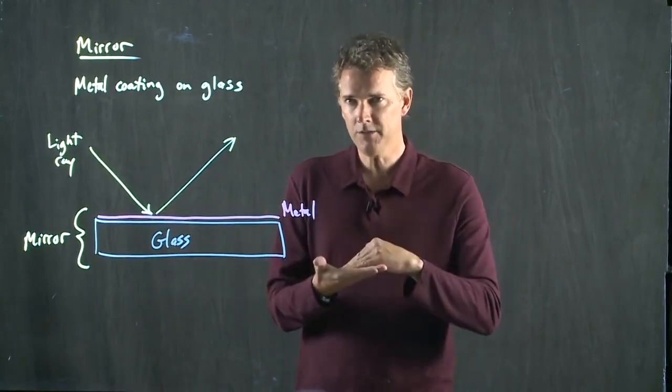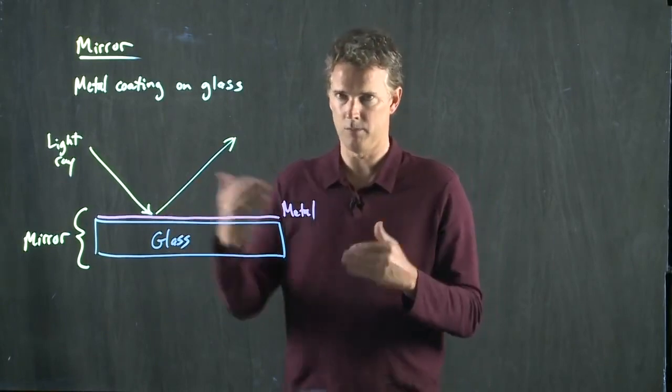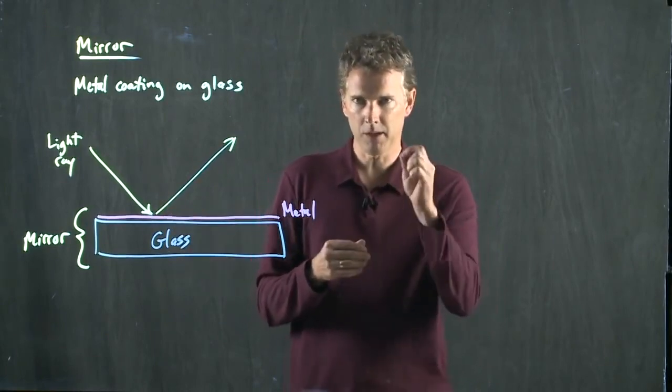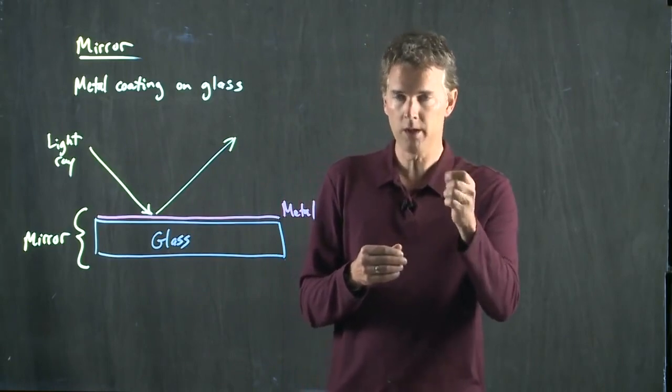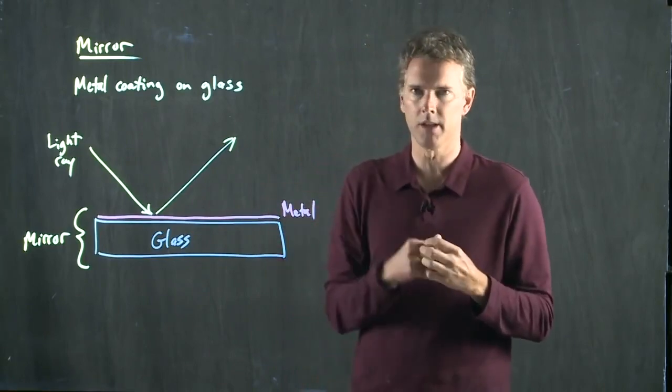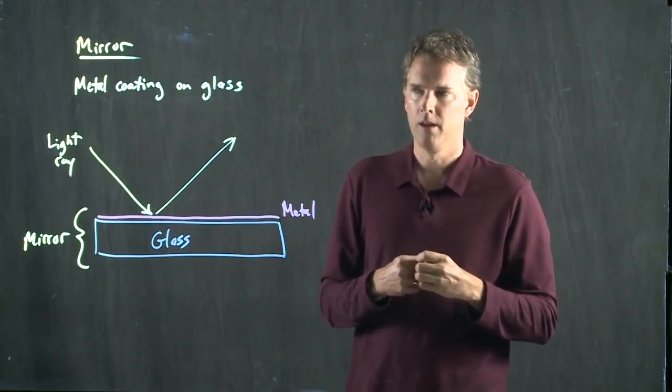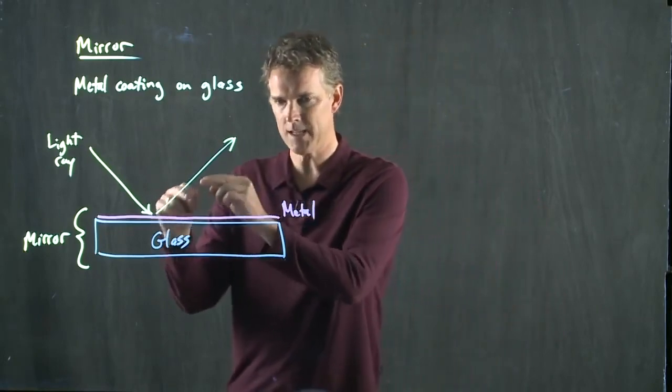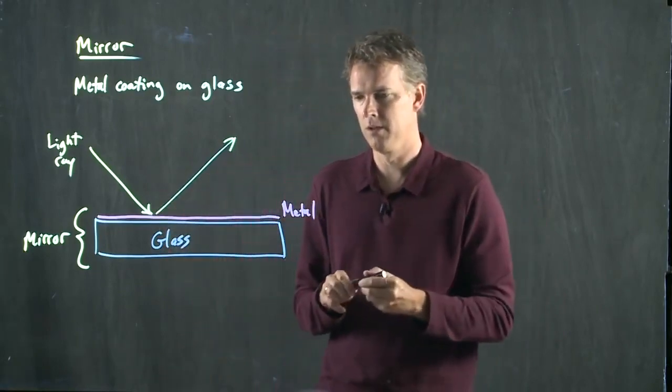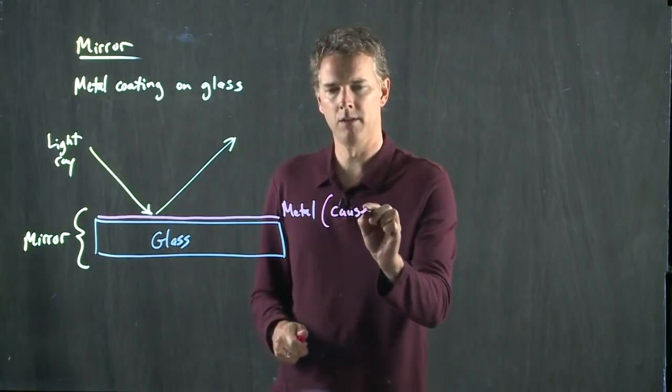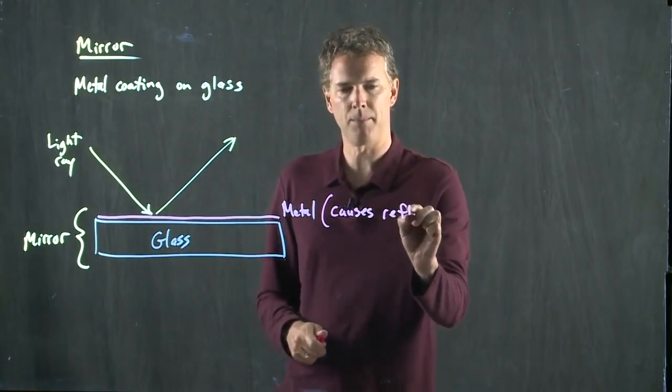If you have an insulator, like a piece of wood, it doesn't reflect the light ray. And that's because those little charges in the wood can't move quite as easily as the charges in the metal. So the metal is, in fact, what does the reflection. Metal causes that reflection to happen.